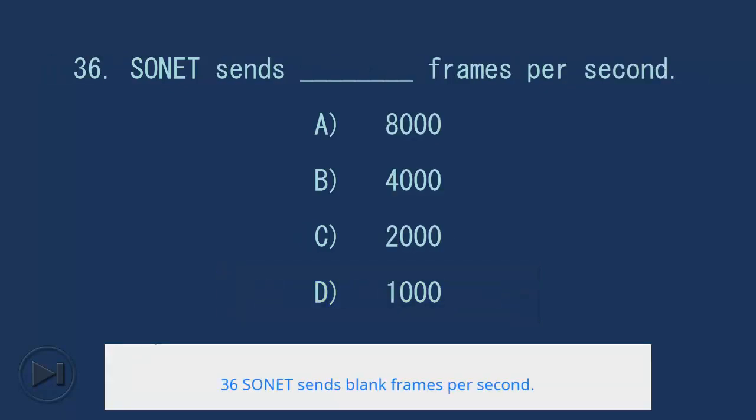36. SONET sends blank frames per second. A. 8000, B. 4000, C. 2000, D. 1000. Answer: A. 8000.